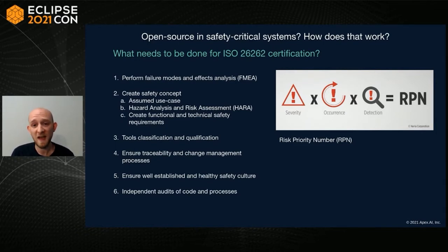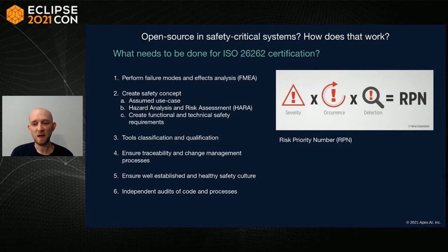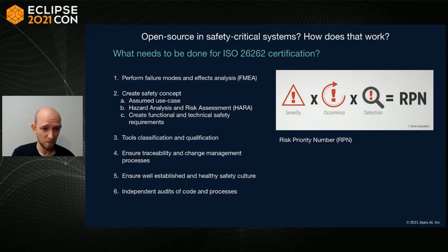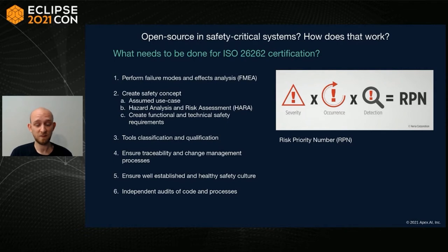Certification should prevent hazards, malfunctions, or failures and propose mitigations. Typically you start with an FMEA — Failure Modes and Effects Analysis — an inductive analysis to control systematic failures. This contains a Risk Priority Number to prioritize different modules, derived from severity, occurrence, and detection. Then you create a safety concept, write down assumed use cases, do a Hazard Analysis and Risk Assessment, write down requirements, classify and qualify the tools, ensure traceability and change management, establish a healthy safety culture, and perform independent audits of both code and processes.